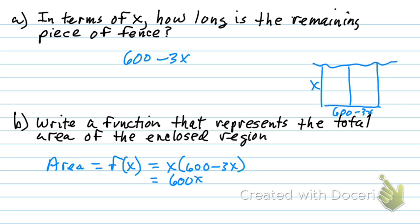And so I've got 600X minus 3X square. I'm going to go ahead and write it in standard form. So I've got negative 3X square plus 600X. Okay, so there's my equation. What do we have to know? How do you get the area of a rectangle?